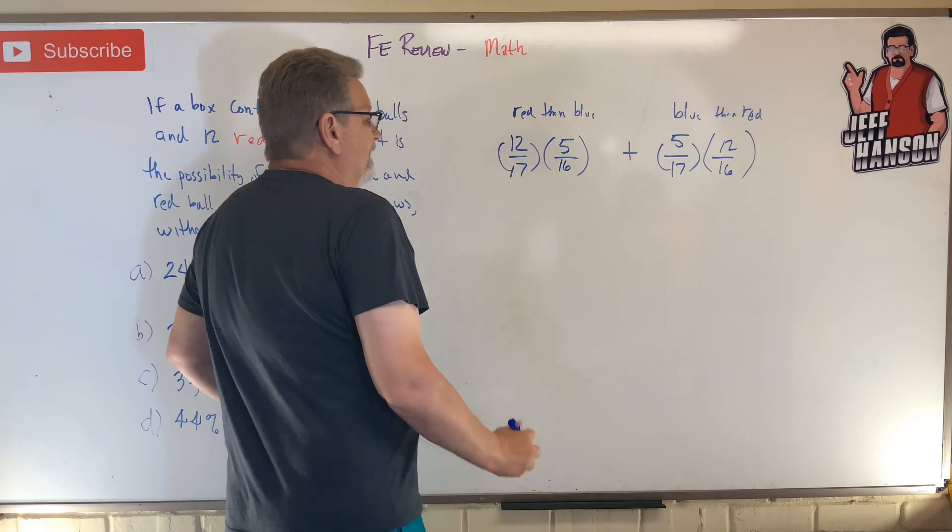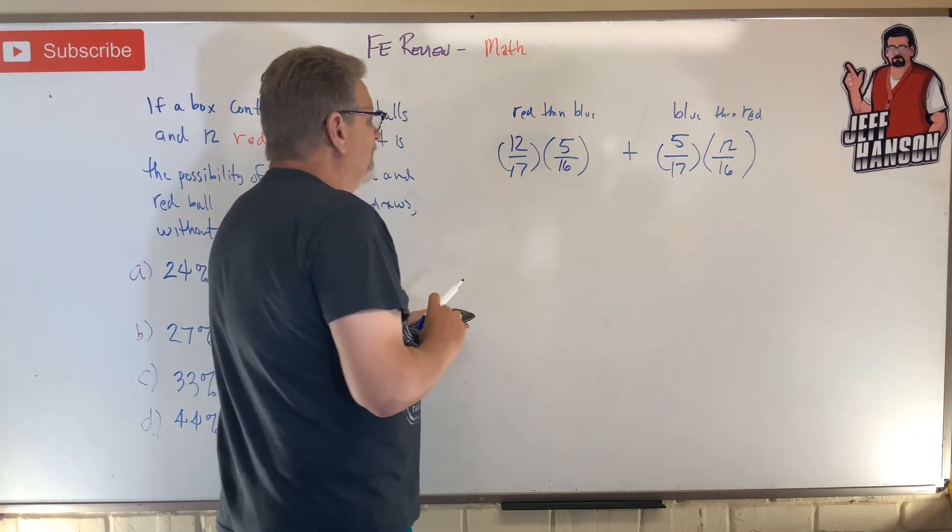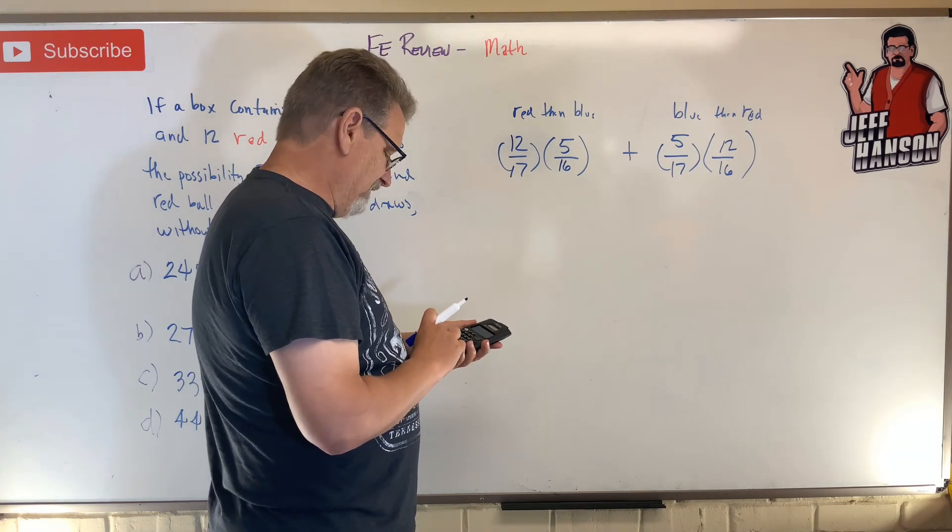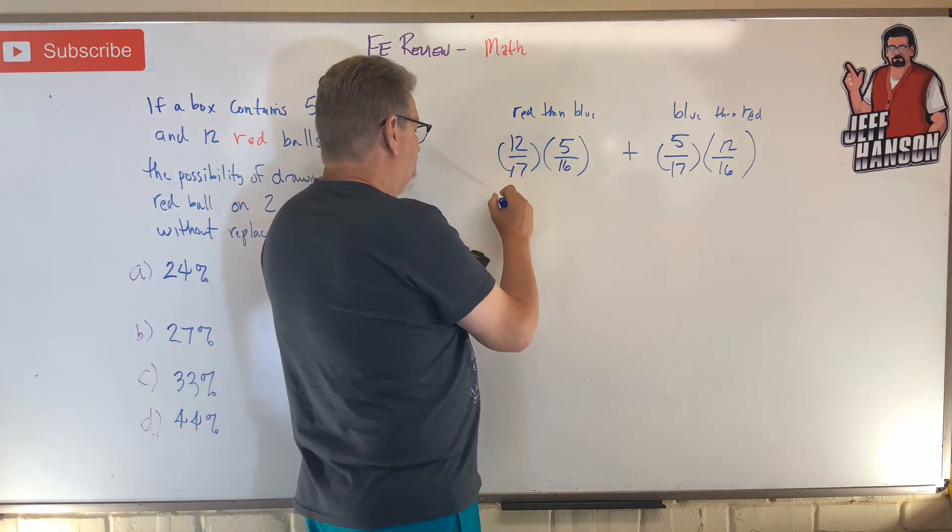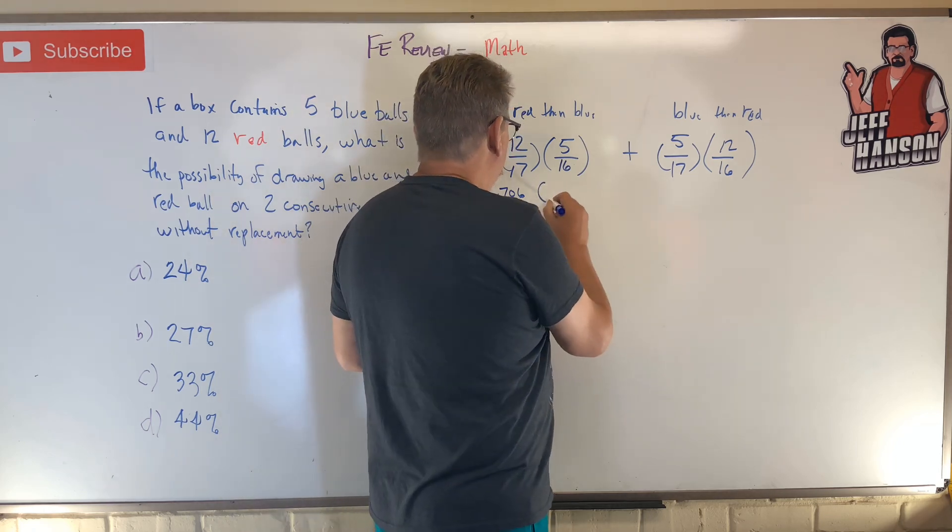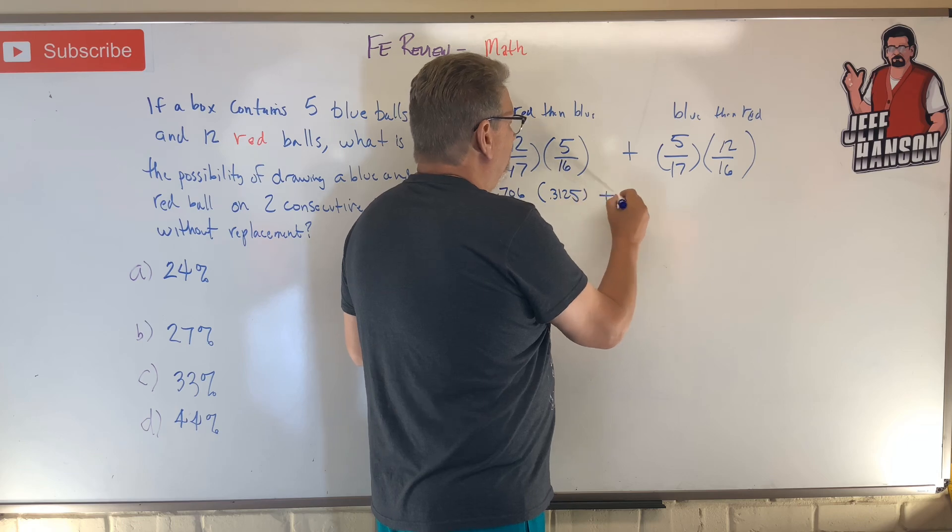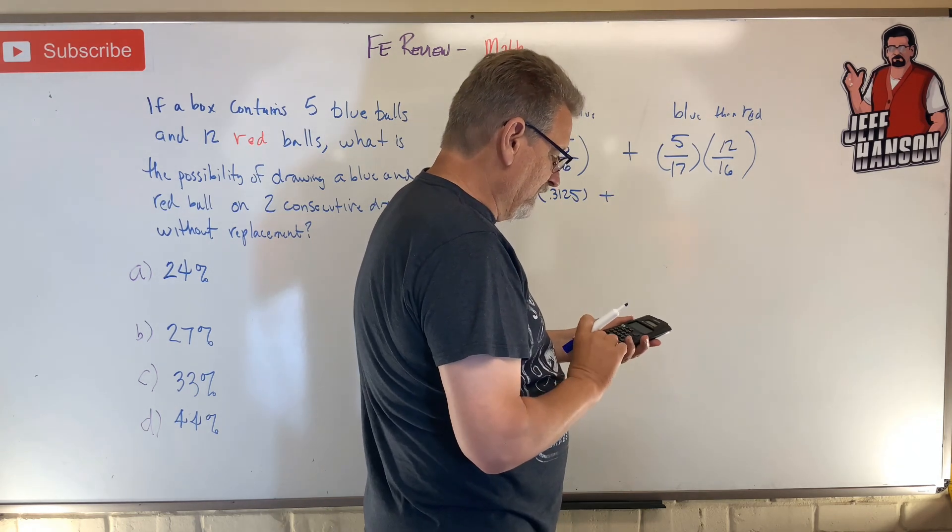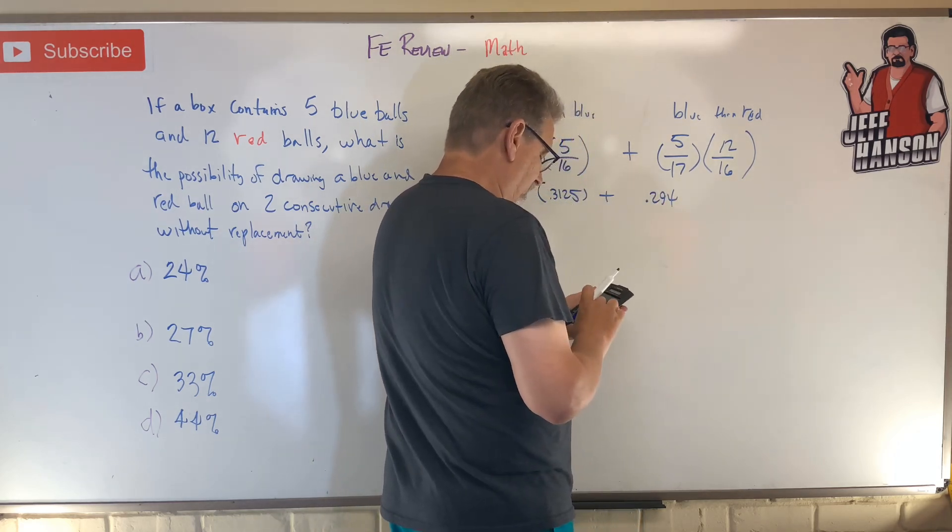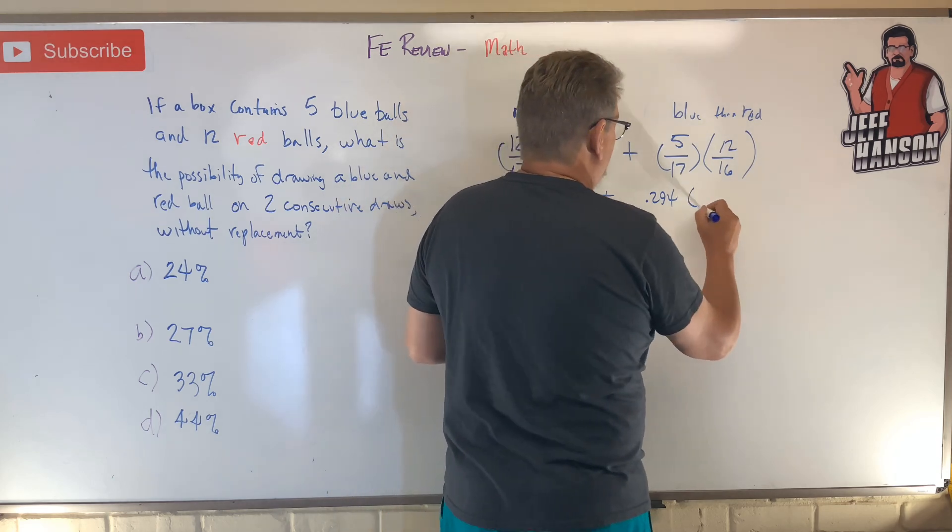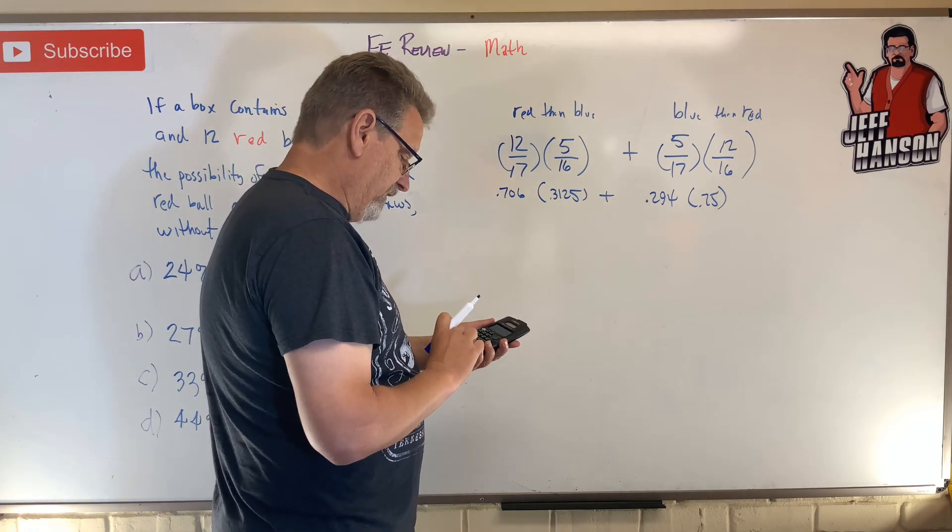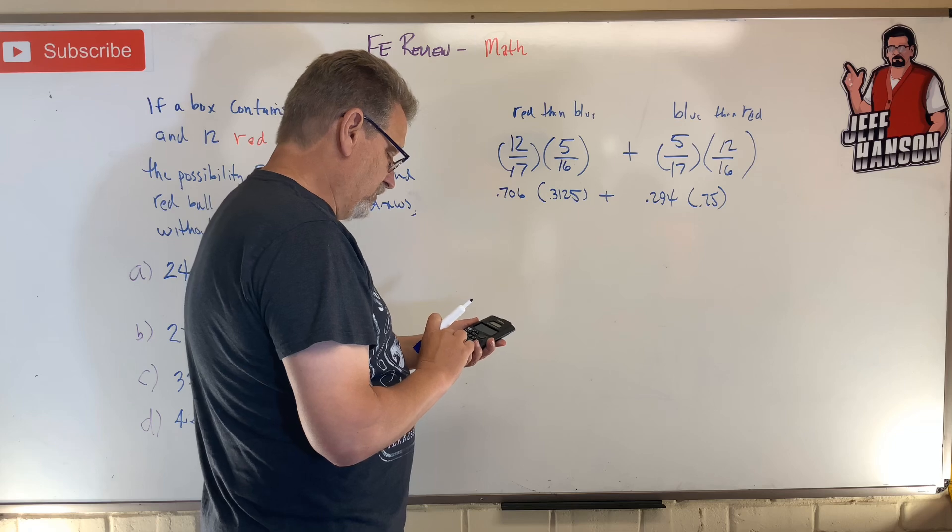And then if we add those two things together we should have it. So, 12 divided by 17 is 0.706, and then 5 divided by 16 is 0.3125. Plus 5 divided by 17, 0.294, and then 12 divided by 16 is 0.75. So 0.706 times 0.3125 plus 0.294 times 0.75 equals...